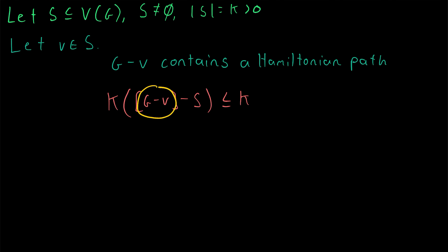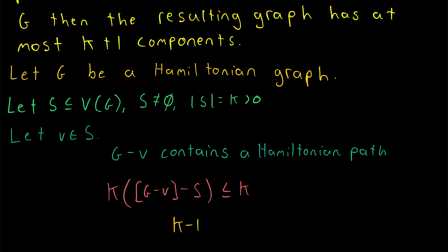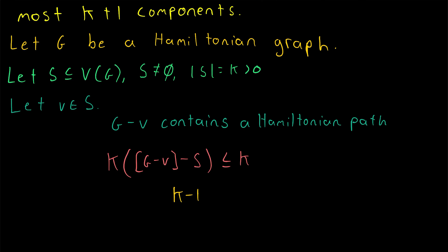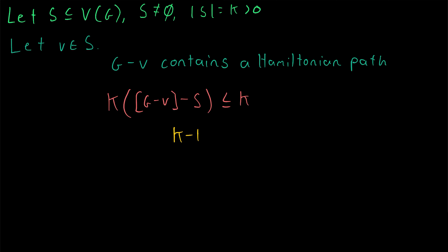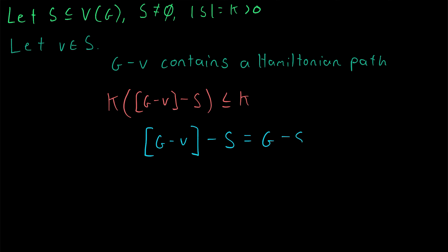Applying the Hamiltonian path result tells us that the number of components in G minus V minus S is less than or equal to k minus one plus one, which is k. Since V is an element of S, the graph G minus V minus S is the same as G minus S — we're deleting exactly the same vertices. Therefore, the number of components in G minus S is less than or equal to k.